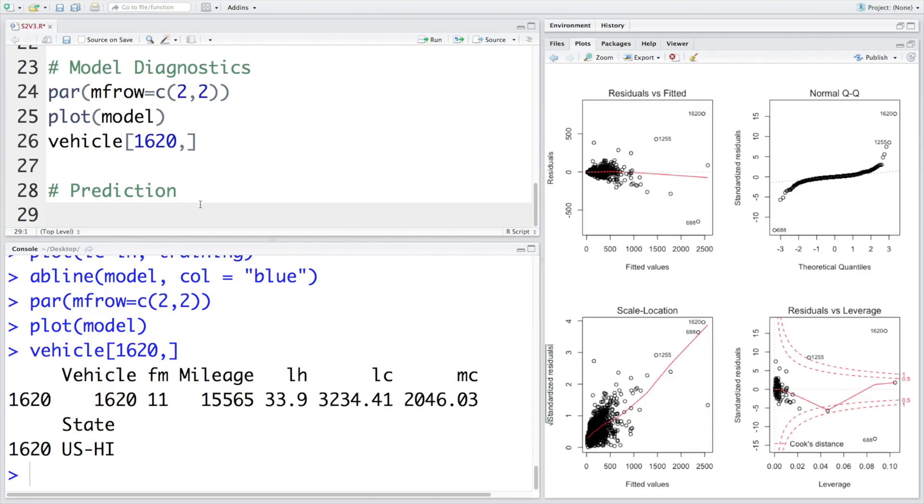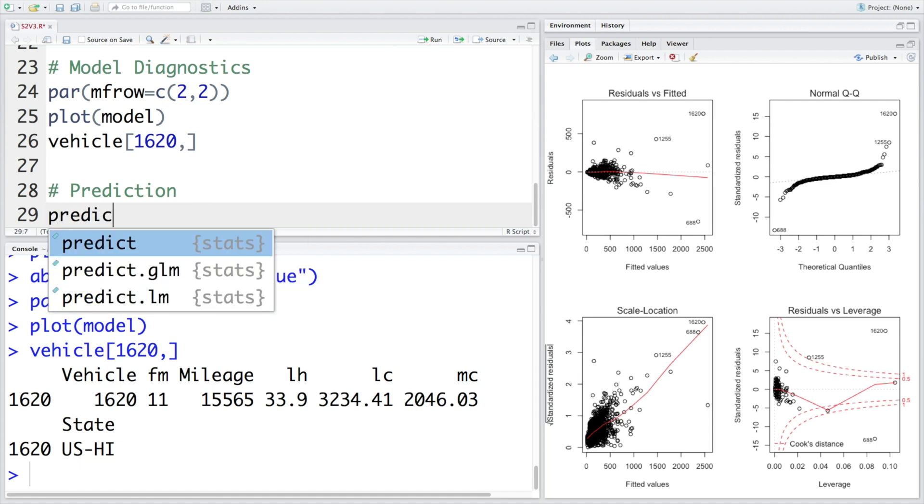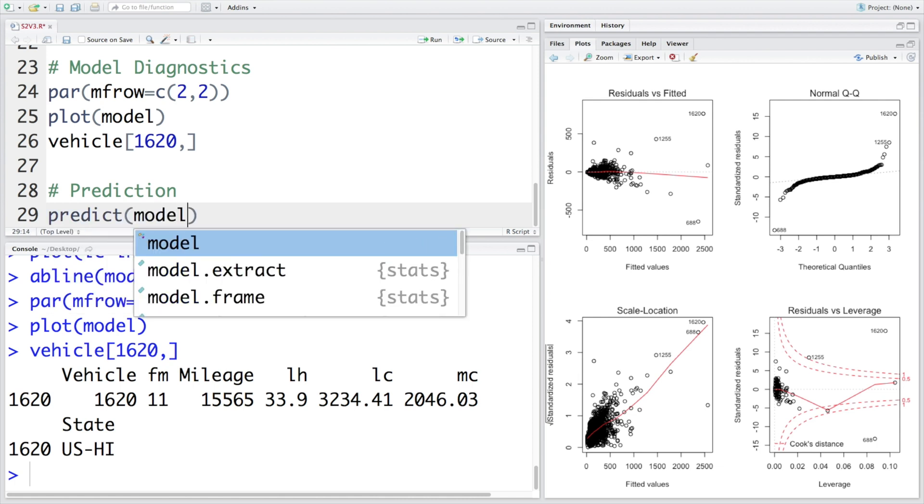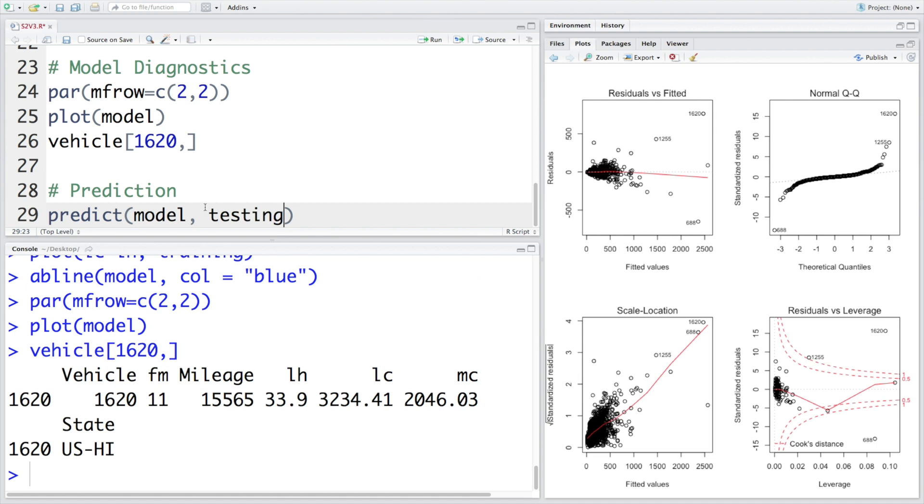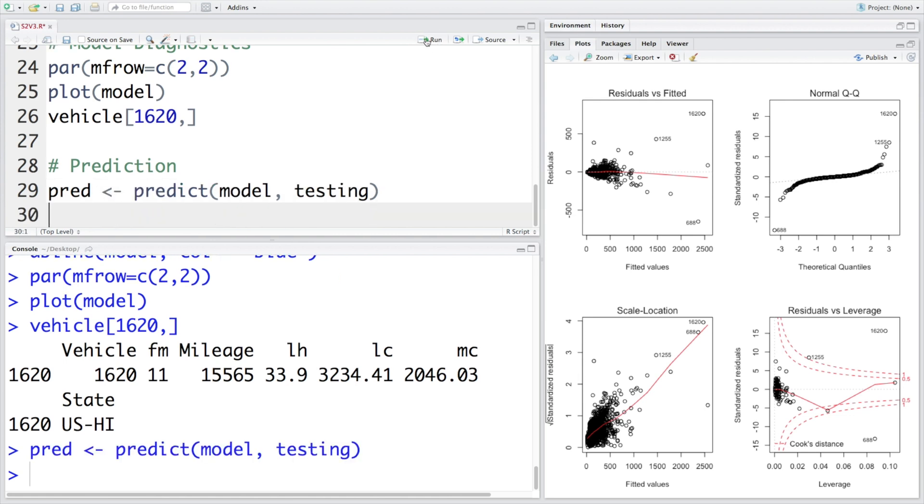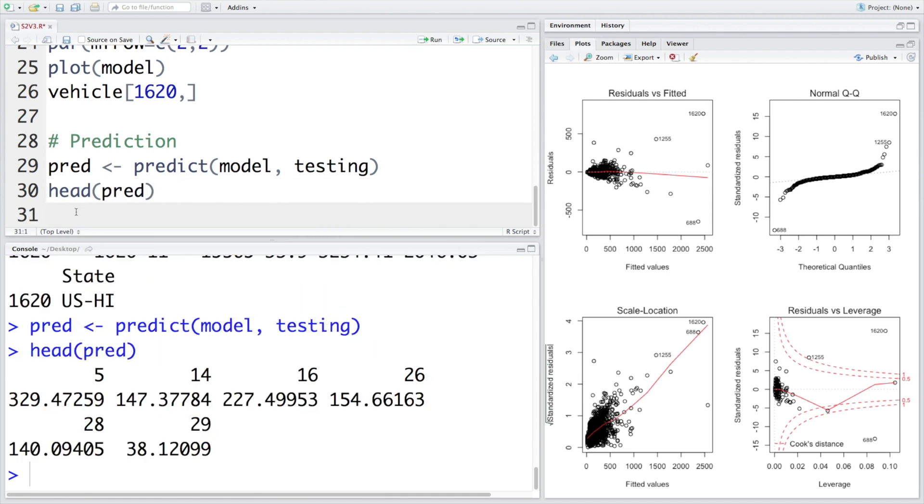Now, once we have the model, this model can be used for making predictions. We can make use of predict command. Use the model, and let's use testing data. So this testing data has not been seen by the model. We will store predictions in PRED. Let's look at some values of this PRED.